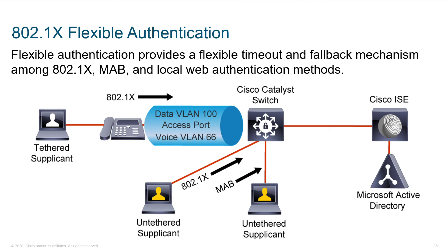Flex-auth means you have the ability to tweak timeouts and fallback mechanisms — what should we try first? Normally we try 802.1x first, but if your organization has five devices that support 802.1x and 100 that use MAB, you could do MAB by default and jump to 802.1x when necessary. Timeouts matter: if you're waiting 30 seconds for 802.1x to time out, then another 30, then another 30, in user-land this is forever. If we want failures to occur faster so things can fail over, we can tweak those timers.